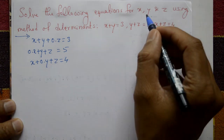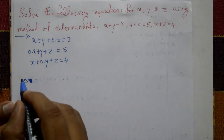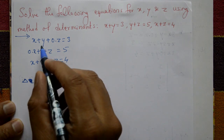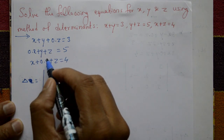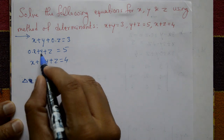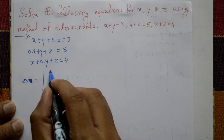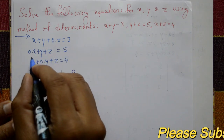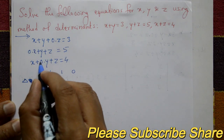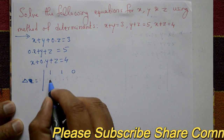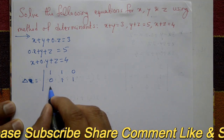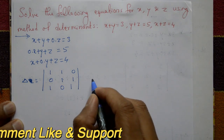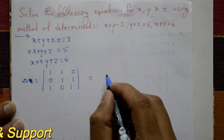First, find delta. Delta is equal to the determinant of coefficients of x, y, z from all three equations. First row: 1, 1, 0. Second row: 0, 1, 1. Third row: 1, 0, 1.